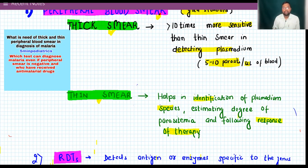Now, if the smear is negative and you strongly suspect the person is having malaria, at least take three samples before labeling it negative. Next, we have rapid diagnostic test.